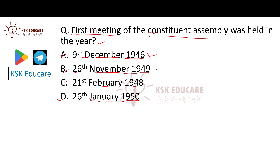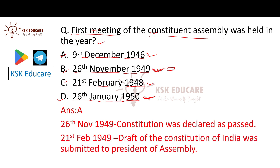For the other options: 26 November 1949 is when the Constituent Assembly adopted the constitution. 21st February 1948 is when the draft constitution was presented. 26th January 1950 is when our constitution came into force.